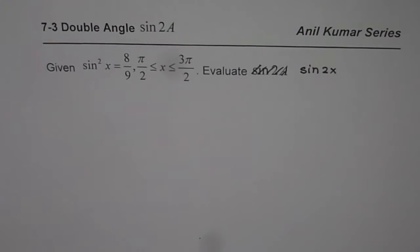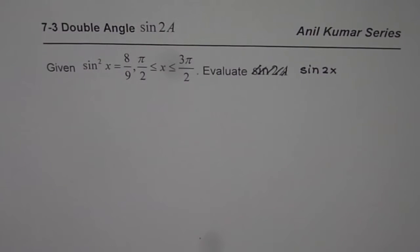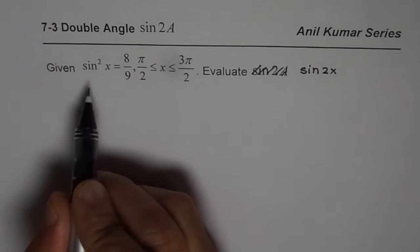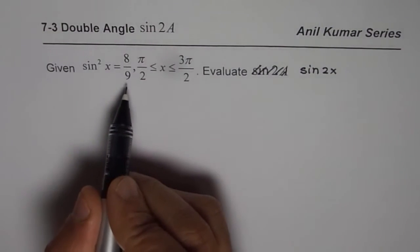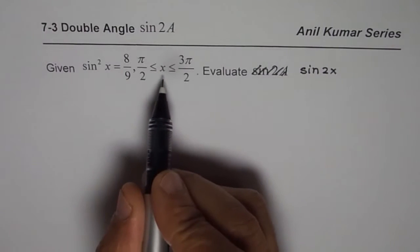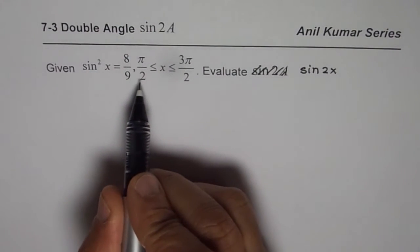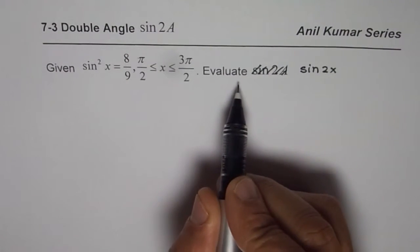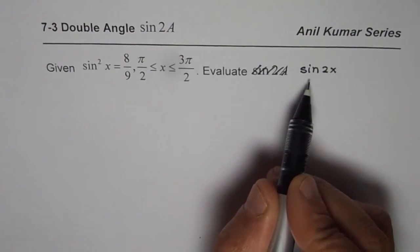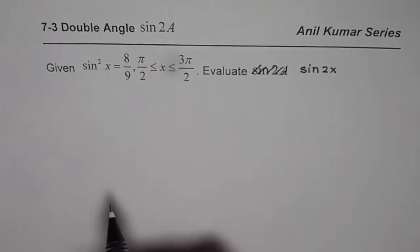I am Anil Kumar and in this series we have another interesting question relating trigonometric ratios. Given sine square x equals 8 over 9, where x is between pi by 2 and 3 pi by 2, you need to evaluate sine of 2x.